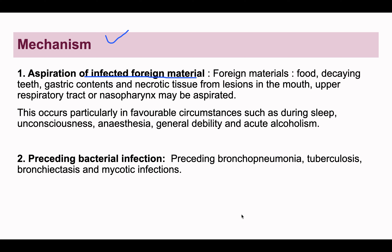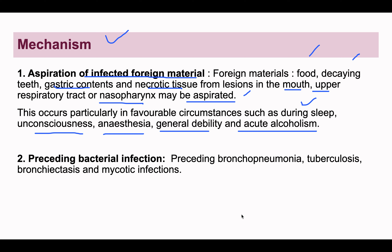Any foreign material such as food, decaying teeth, decaying gingiva, gastric contents, necrotic tissue from the mouth, upper respiratory tract, or nasopharynx — if aspirated, can produce lung abscess. These are mostly aspirated during sleep, unconsciousness, anesthesia, general debility, or acute alcoholism, as in these conditions the reflexes that prevent aspiration are reduced.